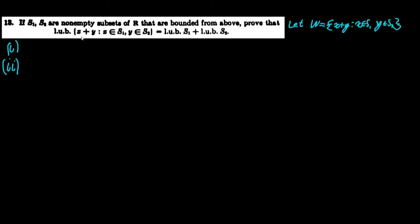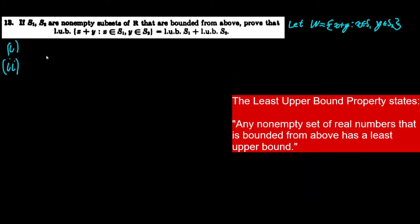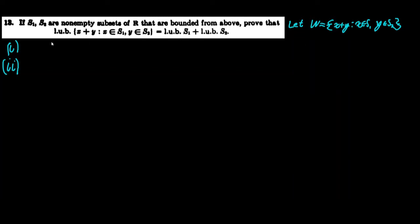We want to be able to talk about this least upper bound, and in order to do so, it has to exist. So we first have to prove that W is non-empty and bounded from above. It's obviously non-empty because s1 and s2 are non-empty, so there must be at least one element in W. So in part one, we'll prove W is bounded from above.